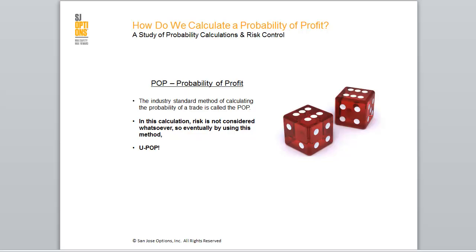How do we calculate a probability of profit? POP is the industry standard traditional method of probability of profit. It is just a range that looks at an option trade structure to expiration. Included in this calculation is the current volatility of the trade assets, which is then plugged into a model — usually the Black-Scholes model.